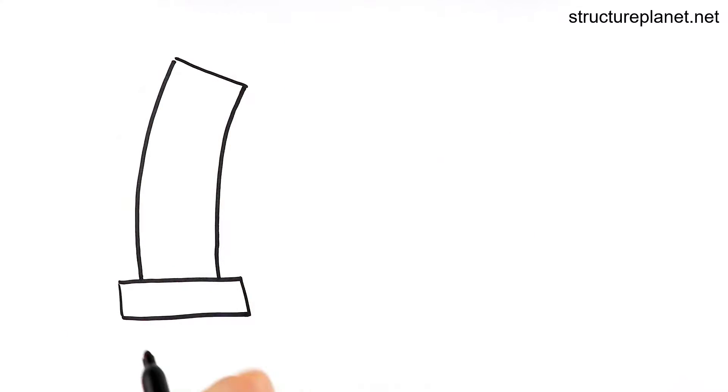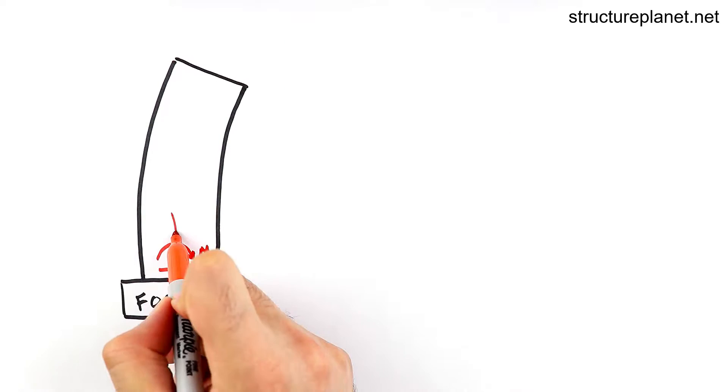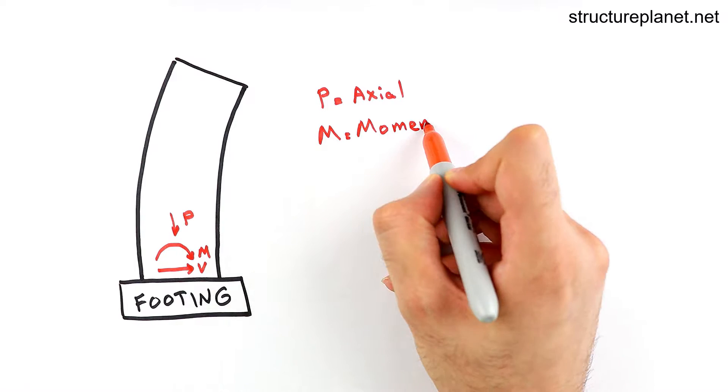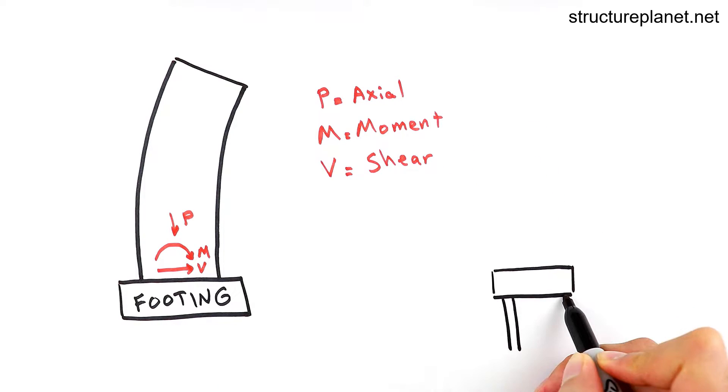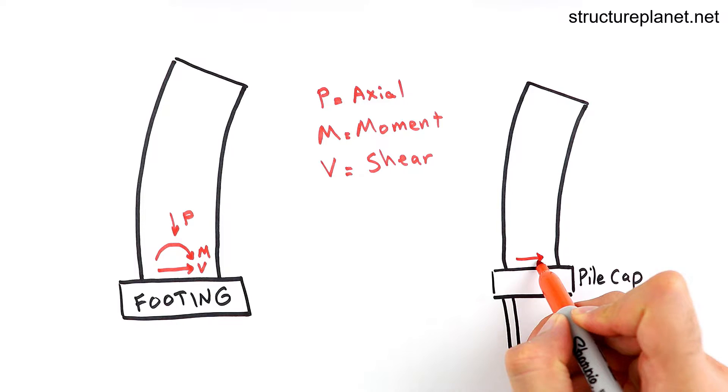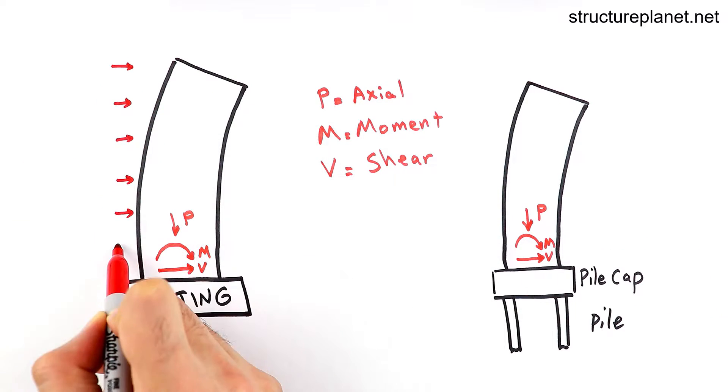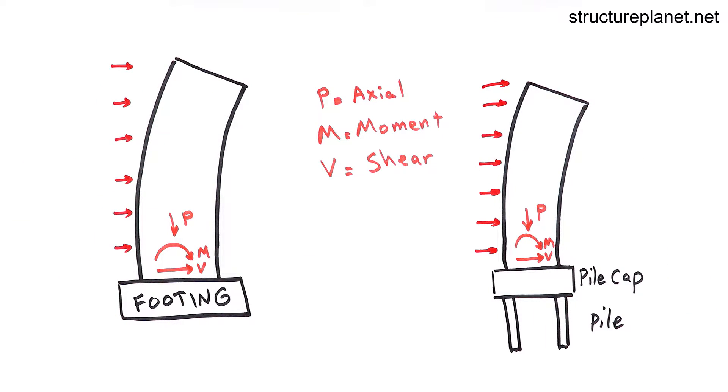Once the lateral loads have already been transferred to the lateral force resisting elements in the floor, it will be transferred down to the foundation system. So let's talk about some of the critical items related to the lateral design that engineers will look for in the process.